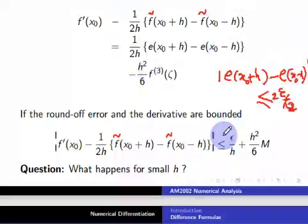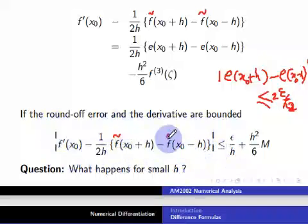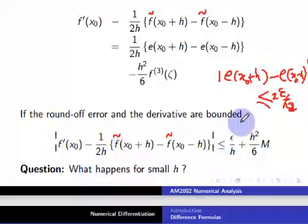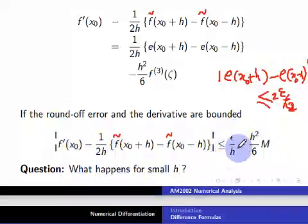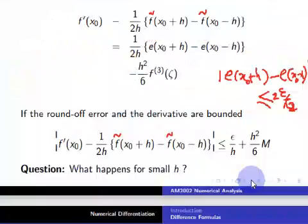Therefore, your round-off error — this is the actual value and this is the approximation that the computer stores — the distance between them is bounded by this quantity. As h becomes very small, the truncation error will reduce. But the round-off error will start dominating because here you have 1/h. That's the key thing mentioned earlier in the lecture.